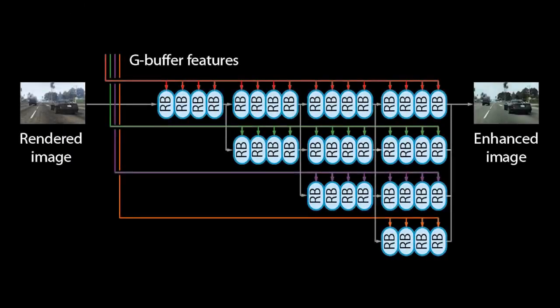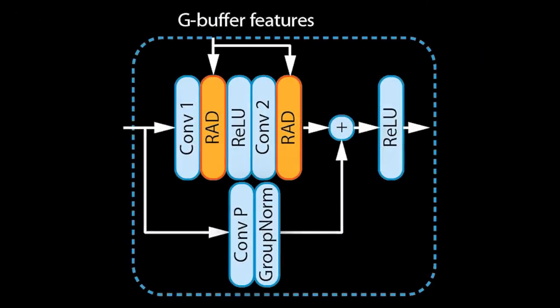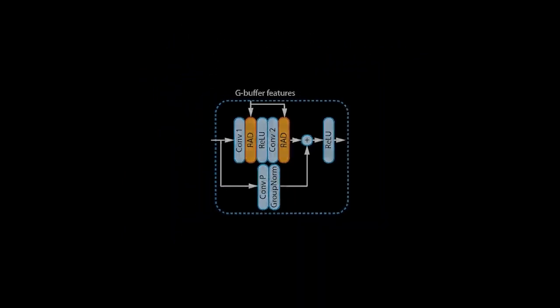Let us now look at the image enhancement network to see what we can do with these multiscale tensors. The enhancement network is based on HR-net, which processes images at multiple scales in parallel. Each scale of the feature tensors matches a scale in the network. The network consists of many residual blocks at each scale. Within the residual blocks, we replace the batch normalization layers with our own rendering-aware denormalization blocks, or RAD for short. The RAD layers modulate features based on the rendering information in the G-buffer feature tensors. For more details, we refer to our paper.